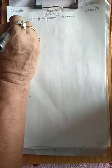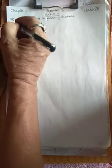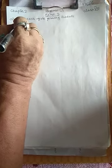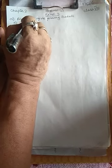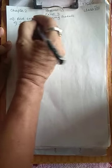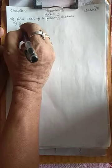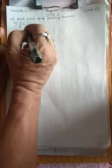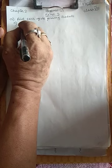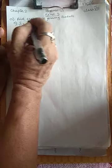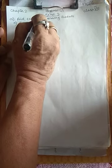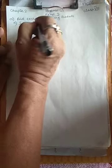Problem A: 5/6 into 7/11. When two fractions are given and you are asked to find their product, you have to multiply both numerator and denominator. So, 5×7 is 35 by 6×11 is 66.